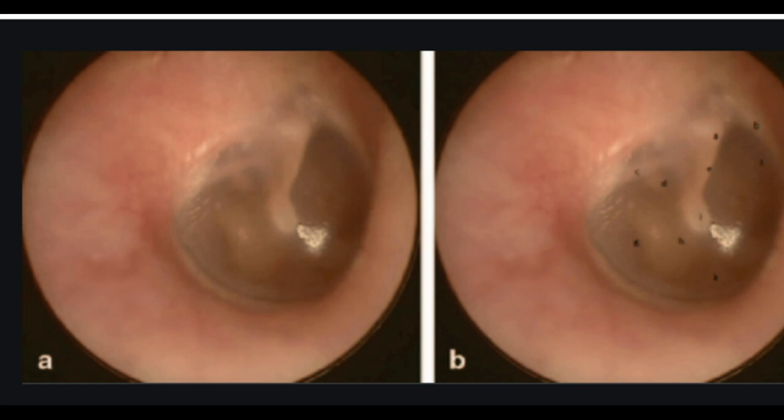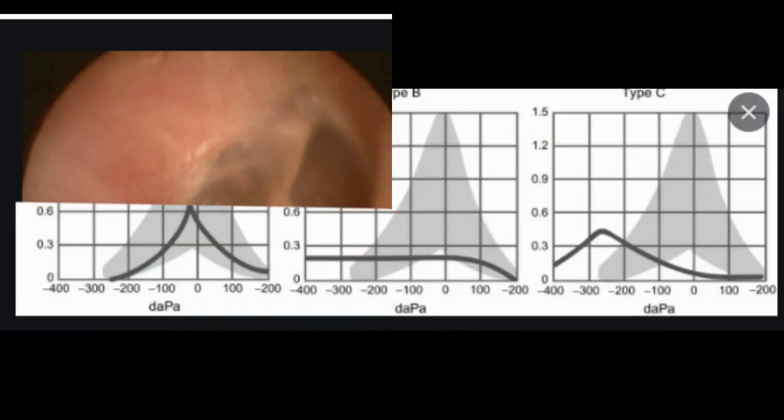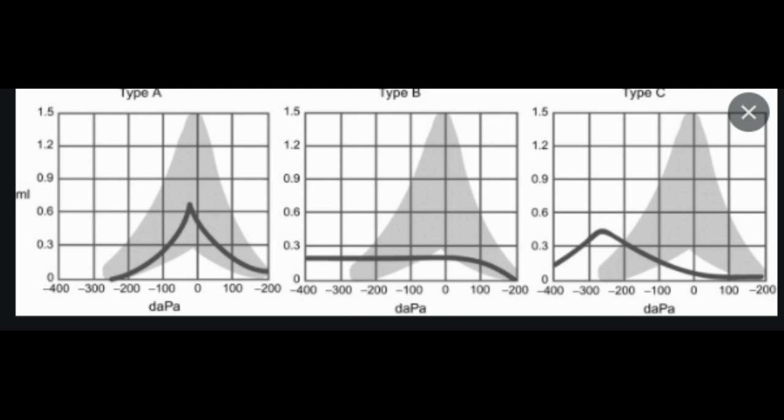Acoustic reflectometry has lower sensitivity and specificity in detecting middle ear effusion and must be correlated with the clinical examination. Tympanocentesis is the preferred method for detecting the presence of middle ear effusion and documenting bacterial etiology, but is rarely performed in the primary care setting. The decision to treat is usually made after a combination of physical exam and laboratory diagnosis, with additional testing including audiometry, tympanogram, temporal bone CT and MRI.